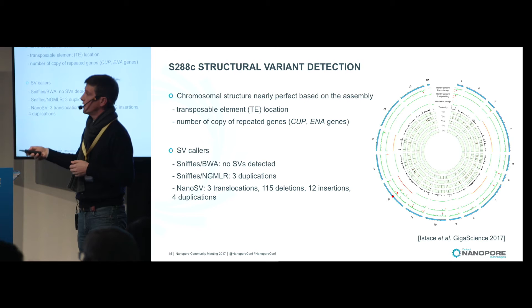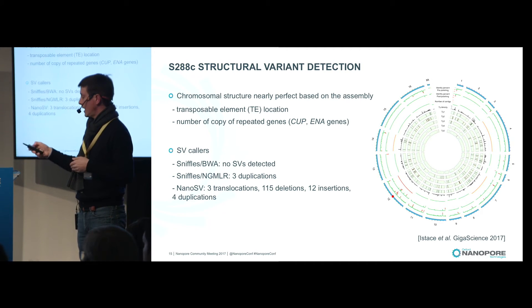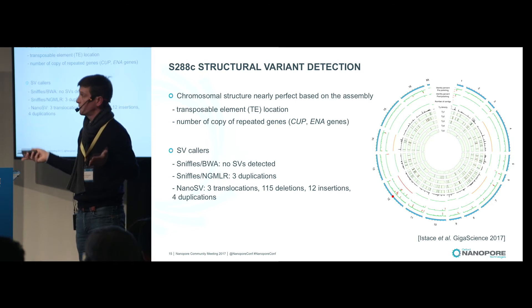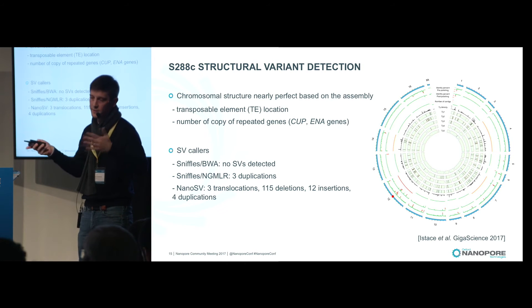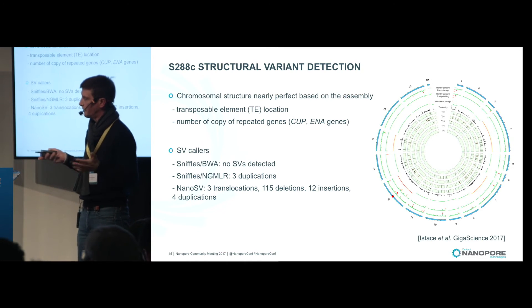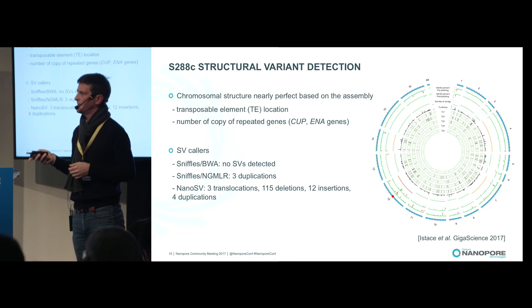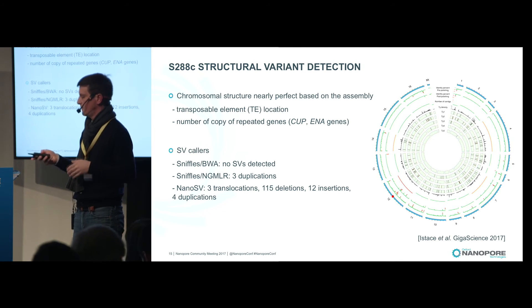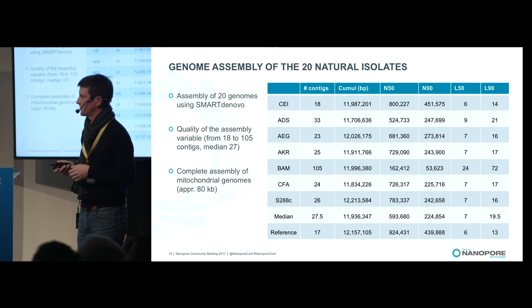We also used different SV callers: sniffles and nanoSV. Using sniffles with different aligners — BWA or NGMLR — the first detected no SVs, which is what you expect, while the second detected three duplications that turned out to be false positives. Using nanoSV, we detected a lot of structural variants. Meaning that for our dataset, nanoSV was not the best SV caller — sniffles was better.